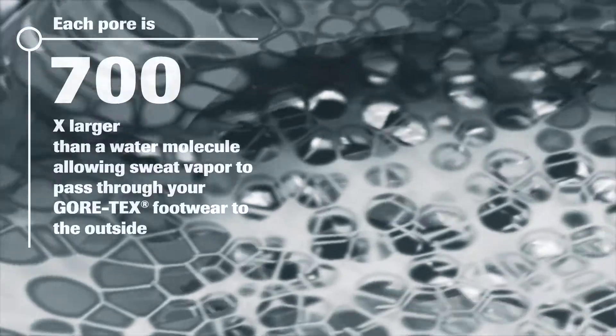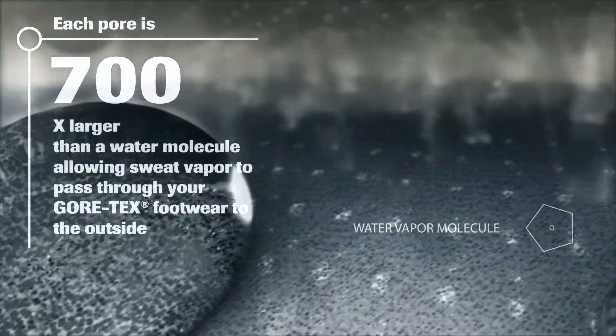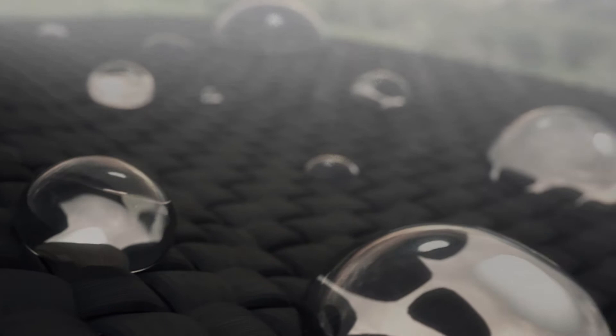While each pore of the Cortex membrane is smaller than a water droplet, it is 700 times larger than a water vapor molecule, allowing sweat vapor generated by exertion to pass through your Cortex footwear to the outside so that you stay dry on the inside.